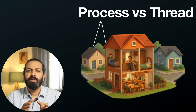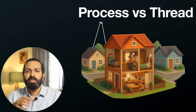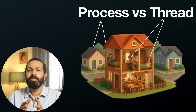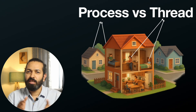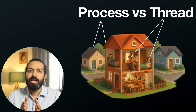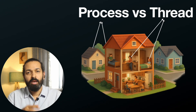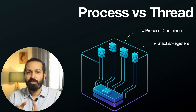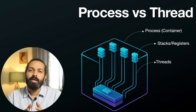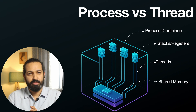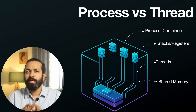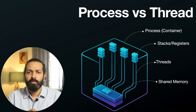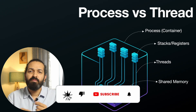A thread is like a person living inside a house. Multiple people can live in the same house, and multiple threads can exist in a process. They share the same kitchen and living room, but each person has their own bed and clothes. In technical terms, threads share the same memory space, code, and data, but each thread has its own stack and registers. Multiple threads in one process can work together easily because they don't need expensive context switching — they can directly share data.